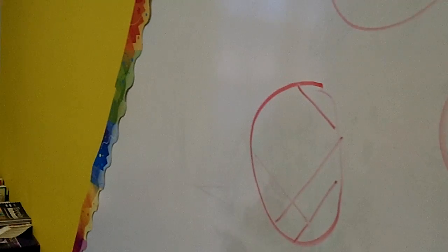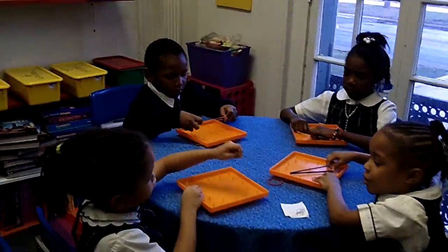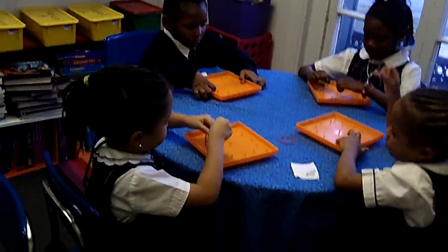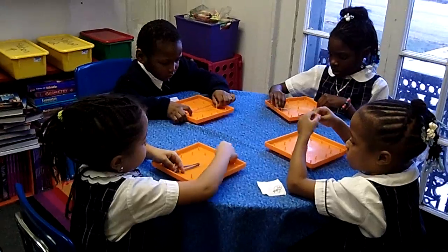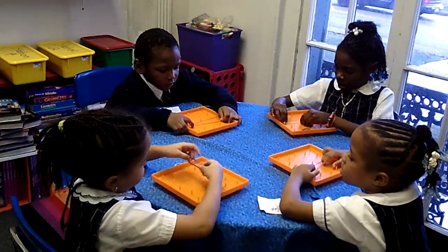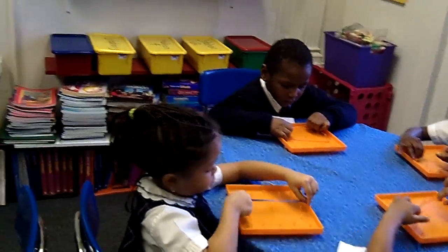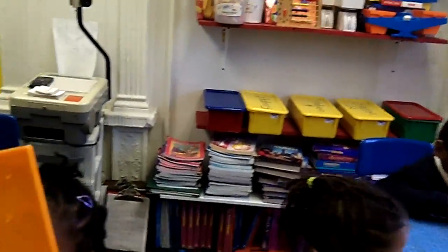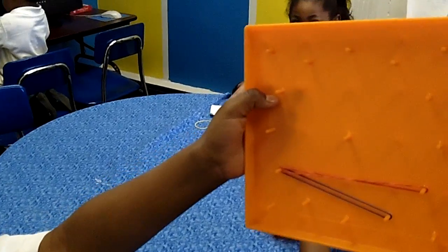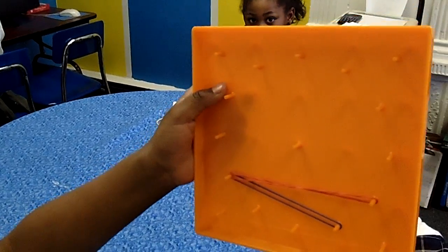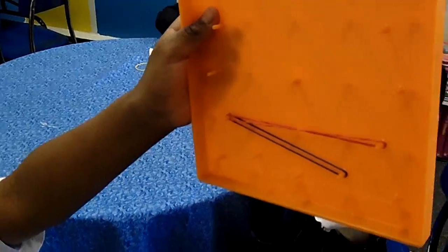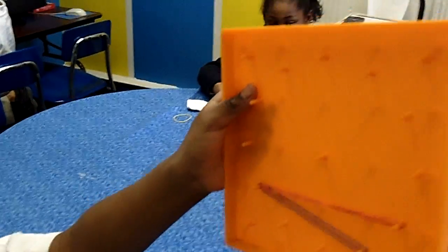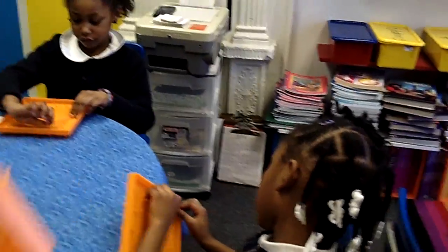Let's make some angles. Can someone make an acute angle with your geoboards? Try to see if you can figure out how to make an acute angle. Nicholas makes one. An acute angle — is that bigger than a right angle or smaller? Smaller. That's an acute angle.